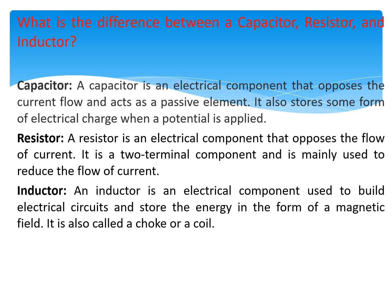What is the difference between a capacitor, resistor, and inductor? A capacitor is an electrical component that opposes the current flow and acts as a passive element; it also stores electric charge when potential is applied. A resistor is an electrical component that opposes the flow of current; it is a two-terminal component mainly used to reduce the flow of current. An inductor is an electrical component used to build electrical circuits and store energy in the form of a magnetic field; it is also called a choke or coil.